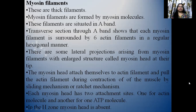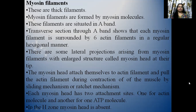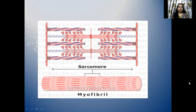Myosin filaments: these are thick filaments formed by myosin molecules. These filaments are situated in the A-band. Transverse section through the A-band shows that each myosin filament is surrounded by six actin filaments in a regular hexagonal manner. There are lateral projections arising from myosin filaments with an enlarged structure called myosin head at their tip. The myosin head attaches to actin filaments and pulls the actin filament during contraction of the muscle by sliding mechanism or ratchet mechanism. Each myosin head has two attachment sites — one for actin molecule and another for one ATP molecule. In the edge zone, myosin head is absent. There is a diagram showing actin filament, myosin filament and myosin head.